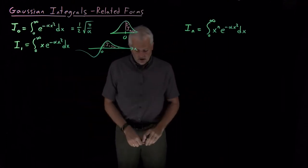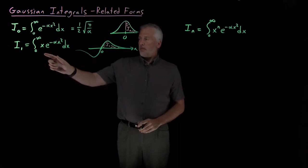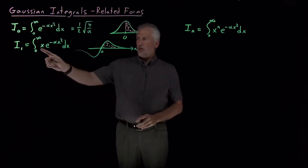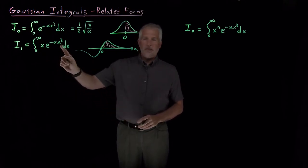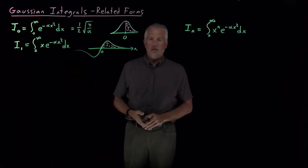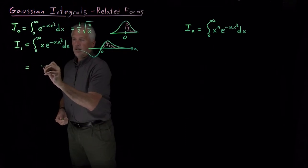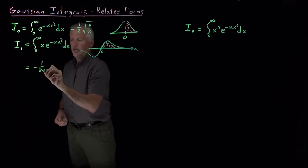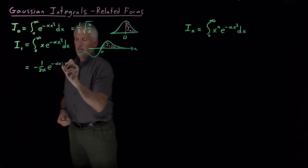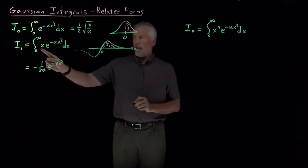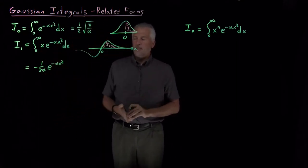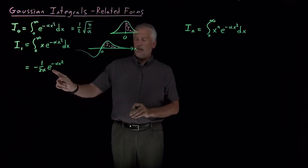This integral is actually relatively simple, either by u-substitution, noticing that x is the derivative of x² or related to the derivative of x², or just by directly writing down. So I've got an alpha here. So integral of x e^(-αx²)...